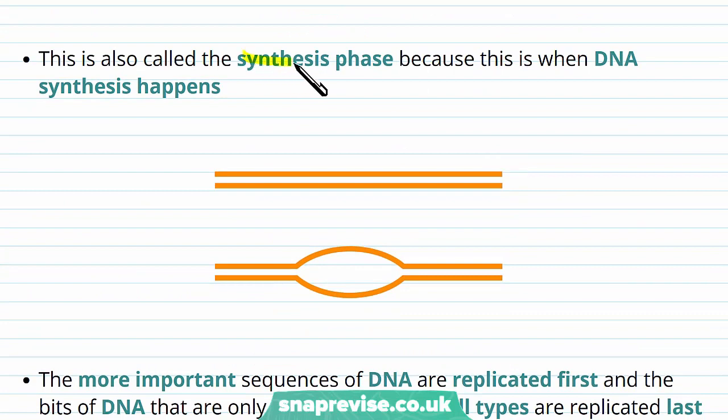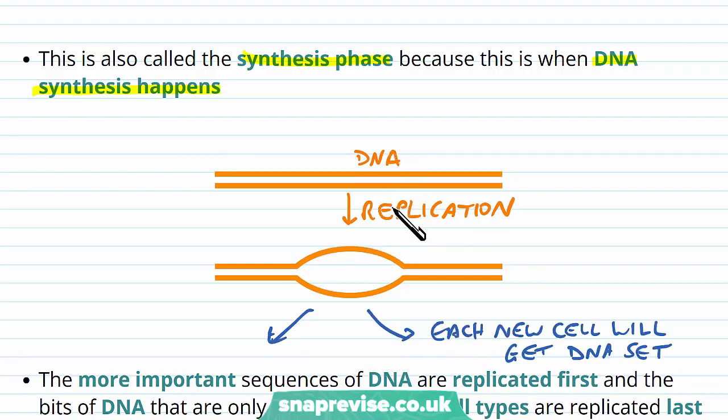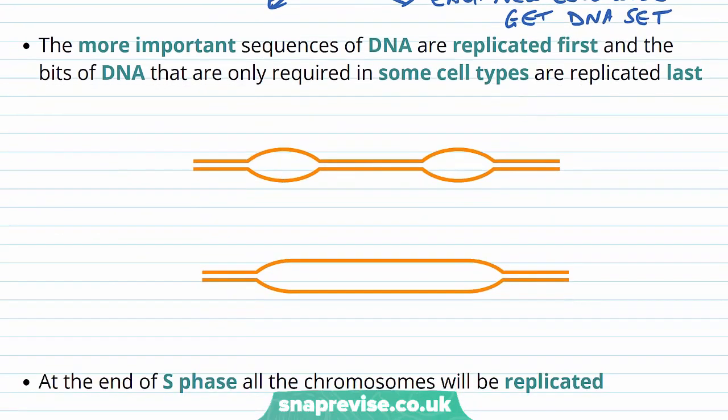We also call S phase the synthesis phase, hence the S, because this is the part where the DNA doubles in size, or DNA synthesis happens. So what happens is every strand of DNA, if we represent that as a double-stranded molecule like this, it gets replicated, and then the genome basically doubles itself. So this is still during interphase, remember, when the cell is still carrying out its function, but now in S phase, the DNA is being doubled, so that each of the new cells will have its own set of DNA. So remember in DNA replication, the strands will separate, and then each strand will have a template strand put upon it, and that will elongate all the way down to the end of DNA, and then eventually, you end up with two new strands of the DNA. When you're replicating DNA, the cell always replicates the most important sequences of DNA first, and the bits of DNA that are only required in some cell types, so those that are less important overall, they get replicated last. So you get replication forks happening at more important genes, and then eventually, all of it gets joined up towards the end.